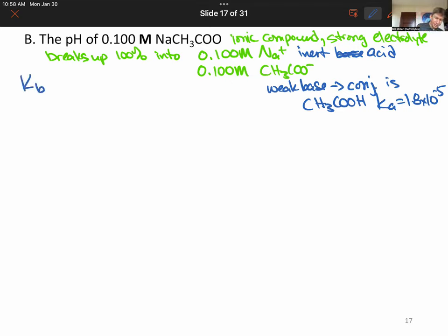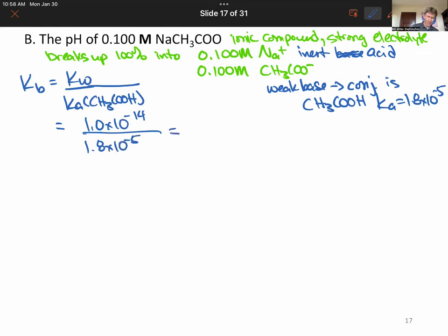So from there, we can figure out what its Kb value is. So Kb is going to be Kw over Ka for its conjugate acid. Kw over 1.8 times 10 to the minus 5th. And we get 5.6 times 10 to the minus 10. That is a weak base.